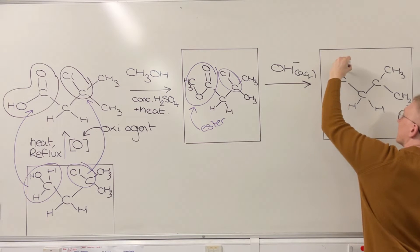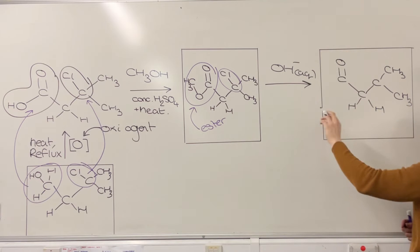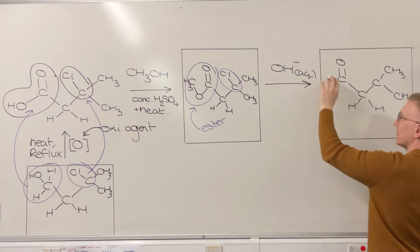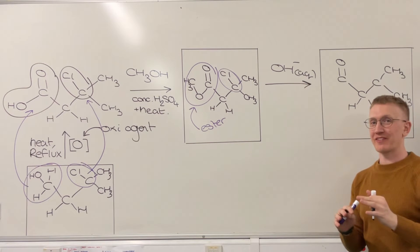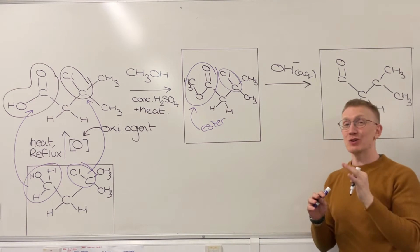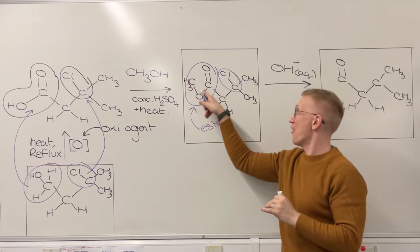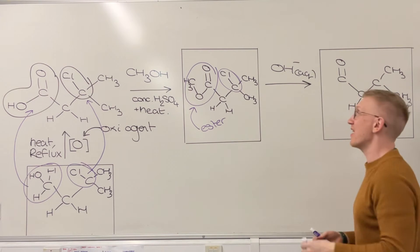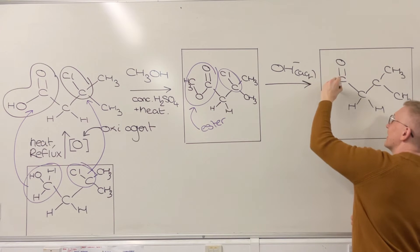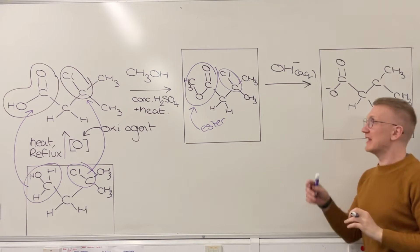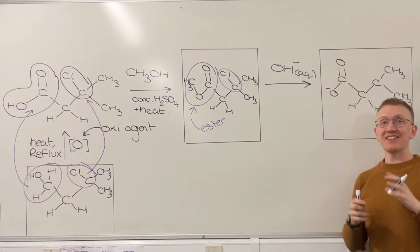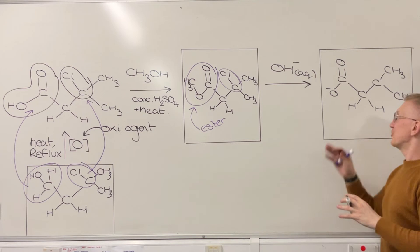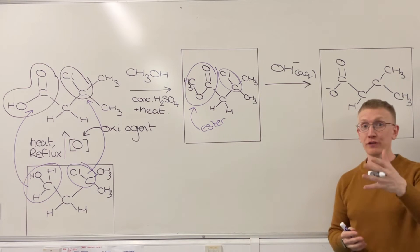I'm going to maintain that C double bond O, but where the ester would normally be, I've used aqueous hydroxide ions which are going to perform an alkaline hydrolysis of this ester functional group. What does that leave behind? It leaves behind this O negative, this oxygen with a single negative charge straight attached to the C double bond O.